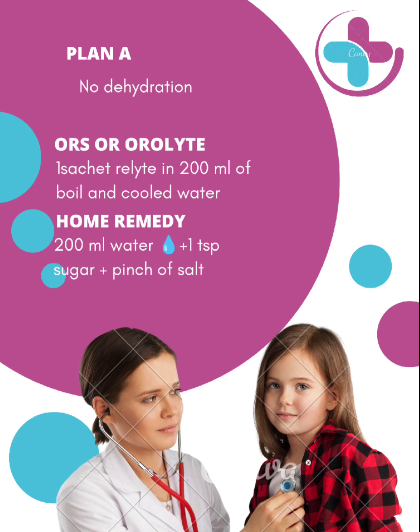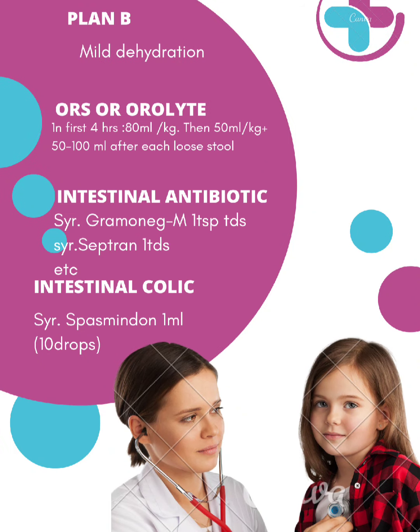Plan B is for mild dehydration. The child will be a little thirsty and irritable. We give ORS in the first 4 hours at 80ml per kg. After that, we give 50ml per kg, plus 50–100ml after each loose stool.